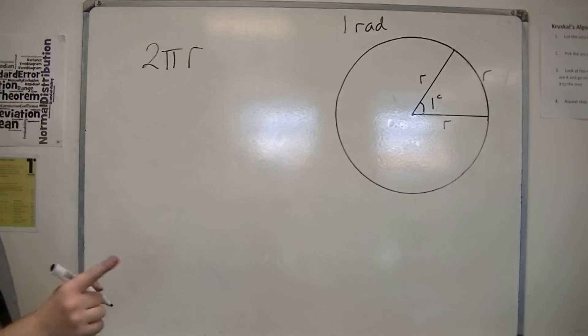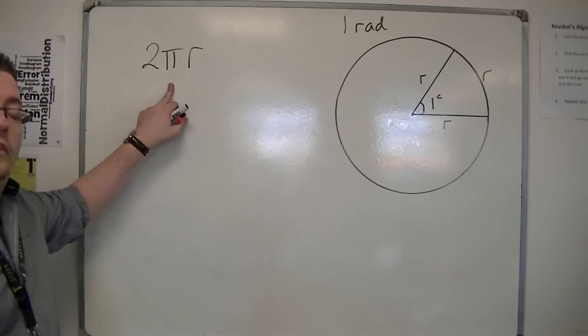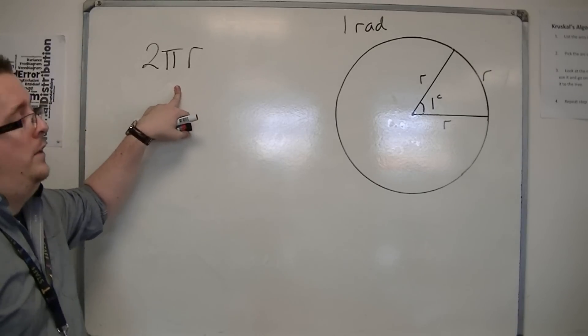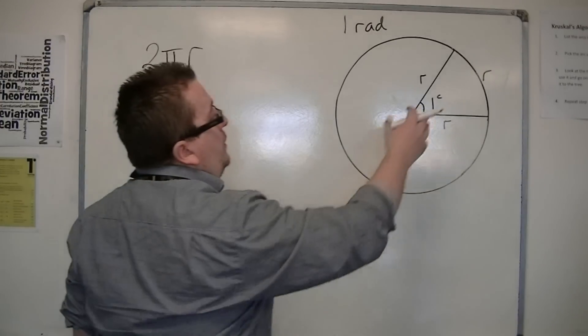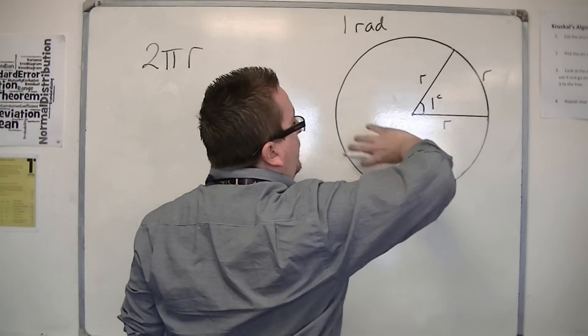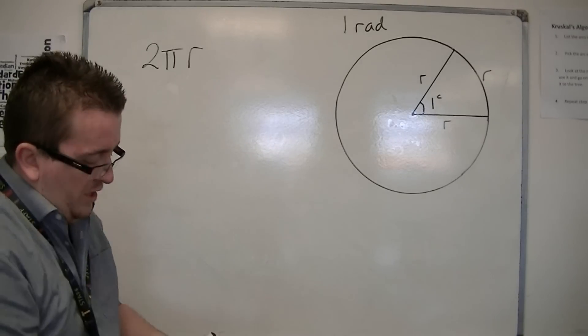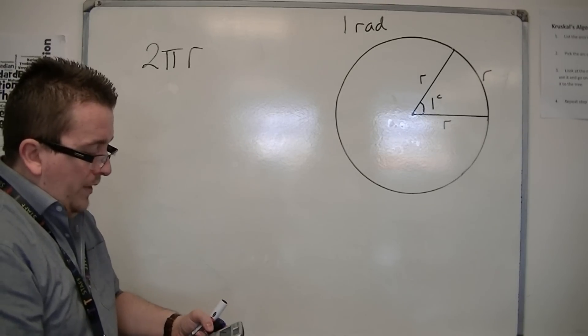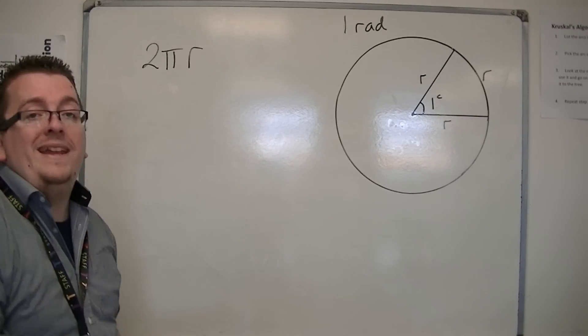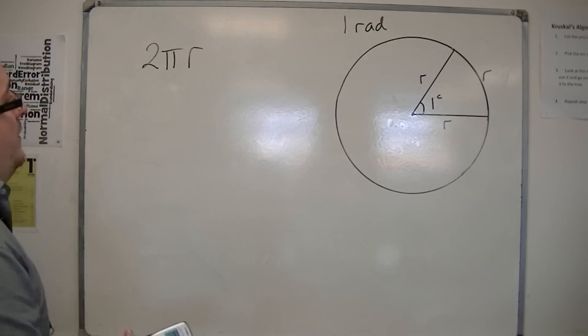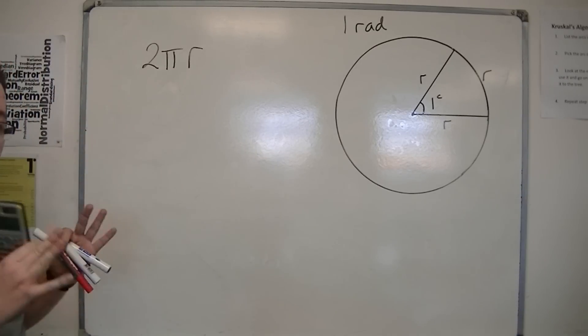Well, actually, you've seen that before, because that's just the circumference of the circle. So the concept is that you could fit this segment into the circle 6 point something times. If we have 2 times pi, that's 6.28 times. So it's exactly 2 pi times.